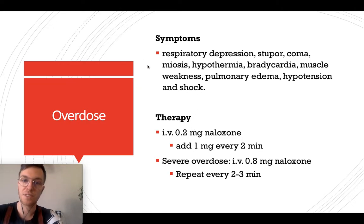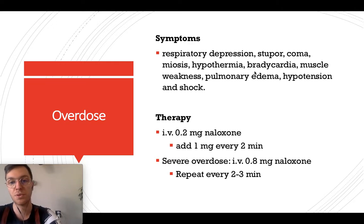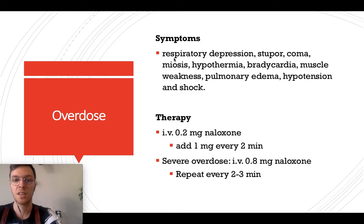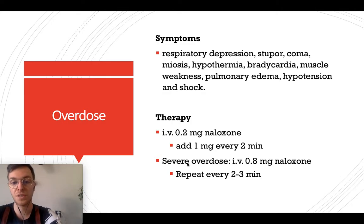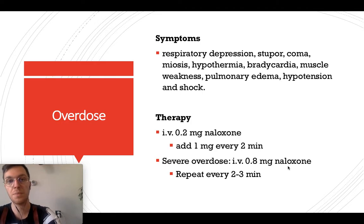In case of overdose, symptoms include respiratory depression, stupor, coma, miosis, hypothermia, bradycardia, muscle weakness, pulmonary edema, hypertension, and/or shock. The treatment is IV naloxone: 0.2 mg initially, then 0.1 mg every two hours. In severe overdoses, give 0.8 mg naloxone and repeat every two to three minutes until symptoms resolve.